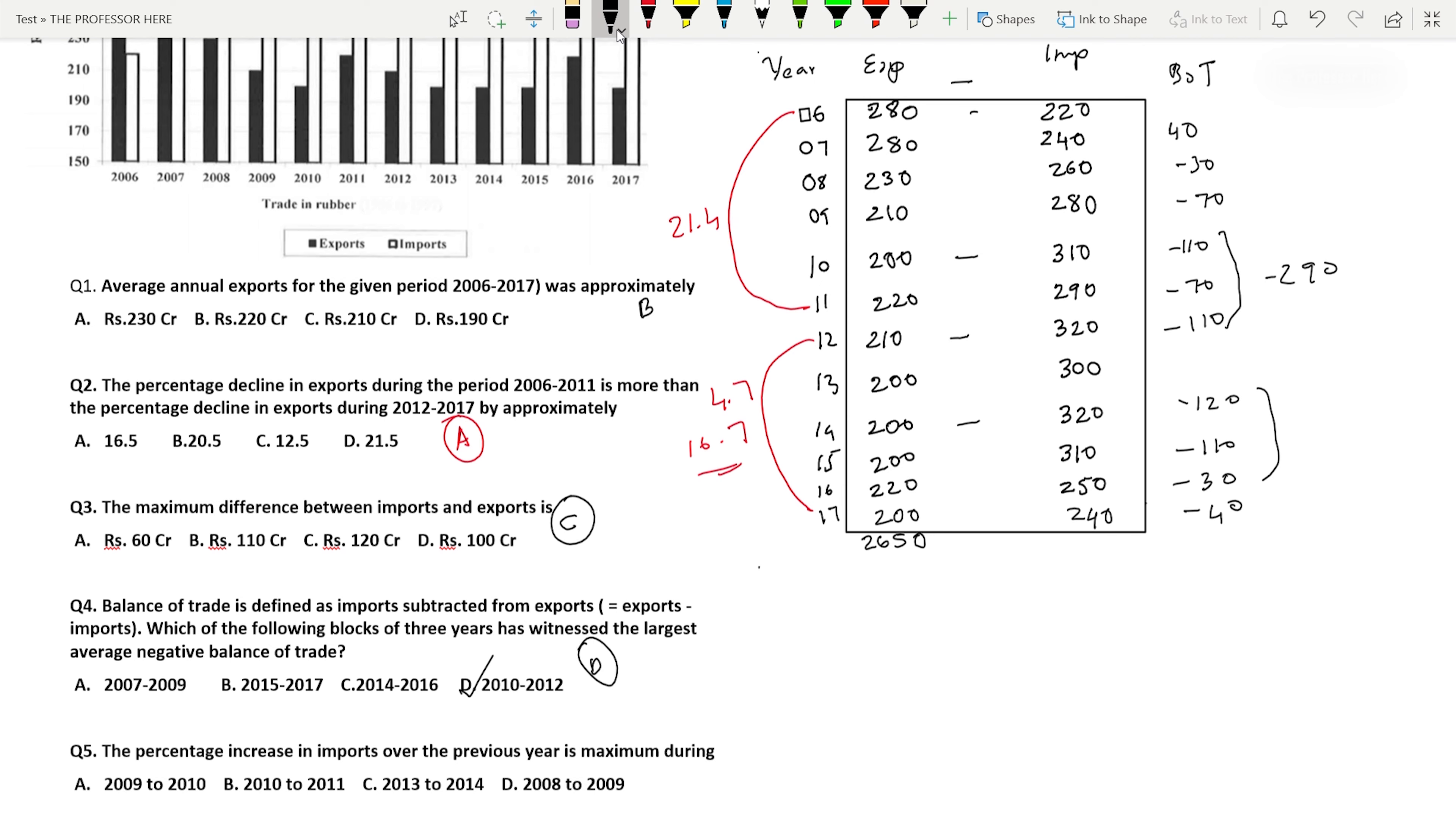Now we come to the last question. Question number five: The percentage increase in imports over the previous year is maximum during. Option A, 2009 to 2010, there is an increase of 30, so 30 divided by 280 into 100. Option B, 2010 to 2011, there is actually a decrease, so we don't have to calculate this. Option C, 2013 to 2014: 320 minus 300 = 20 by 300 into 100. Option D, 2008 to 2009: 280 minus 260 = 20 divided by 260 into 100.